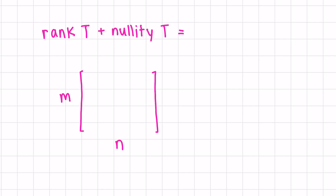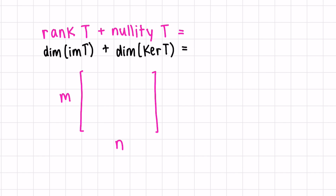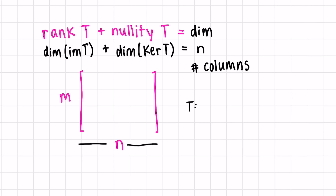What happens if we add the rank of the transformation and the nullity of the transformation? The rank is the dimension of the image of the transformation, and nullity is the dimension of the kernel of the transformation. Since the rank is the number of leading columns and the nullity is the number of non-leading columns in a matrix that represents our transformation, we can conclude that this equals N, the number of columns — or equivalently, the dimension of V, where our transformation goes from V to W.